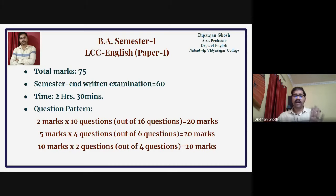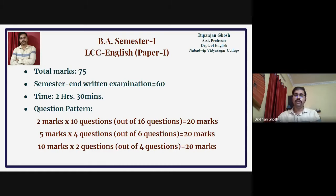The third part: out of 4 questions, you have to answer any 2. Each carries 10 marks, so 10 into 2 equals 20. So the total is 20 plus 20 plus 20 equals 60. The total time is 2 hours and 30 minutes.